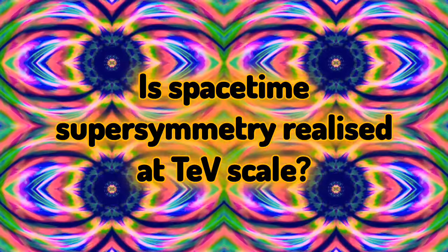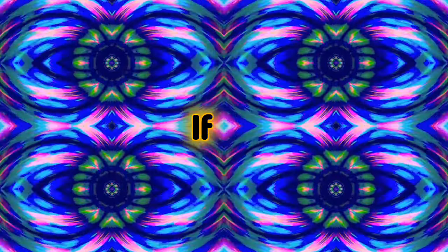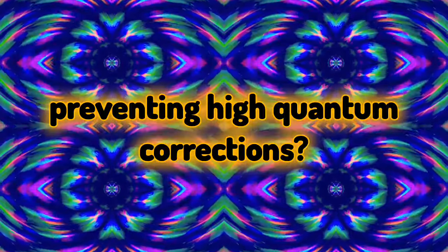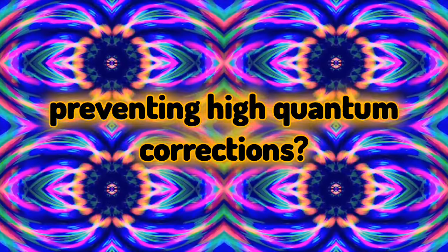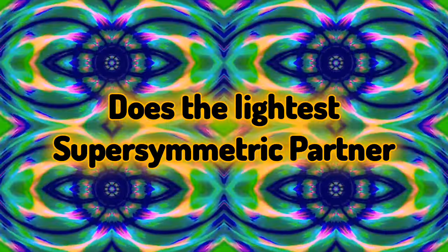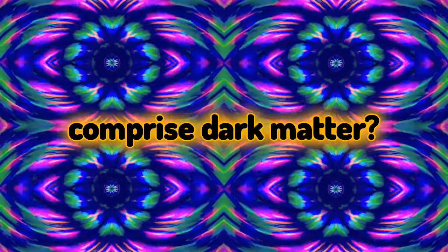Supersymmetry: Is space-time supersymmetry realized at tera-electron-volt scale? If so, what is the mechanism of supersymmetry breaking? Does supersymmetry stabilize the electroweak scale, preventing high quantum corrections? Does the lightest supersymmetric particle, LSP, comprise dark matter?